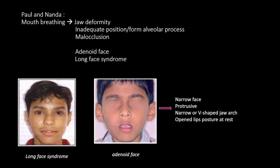According to Paul and Nanda, mouth breathing resulted in jaw deformity — inadequate positions or form of the alveolar process and long occlusion — which can lead to the development of adenoid facies or long face syndrome. Adenoid facies is a narrow face, protrusive, narrow arch, V-shaped jaw arch, and open lips posture at rest.